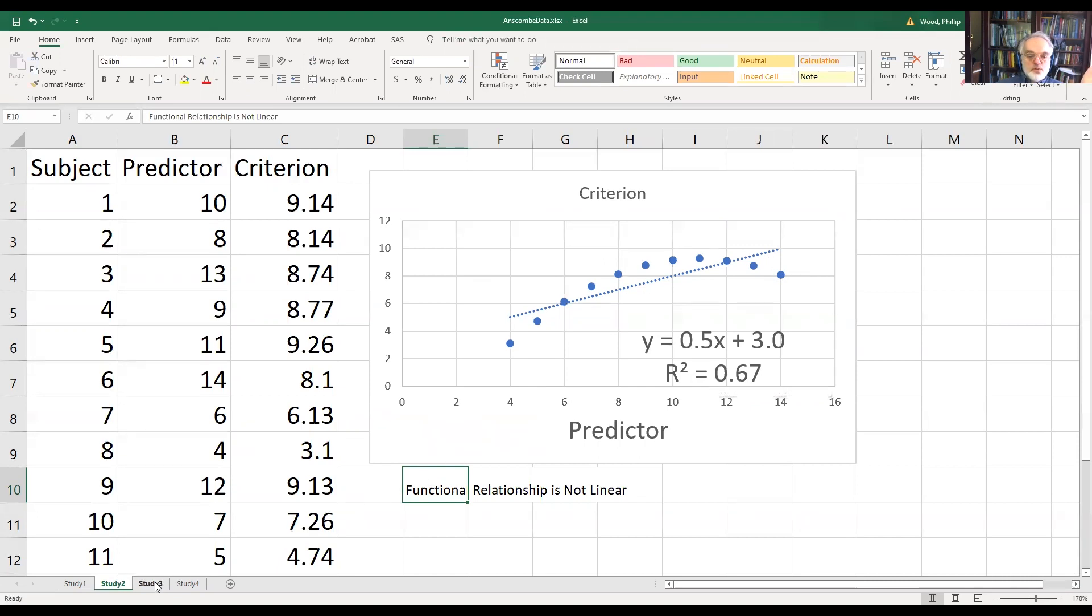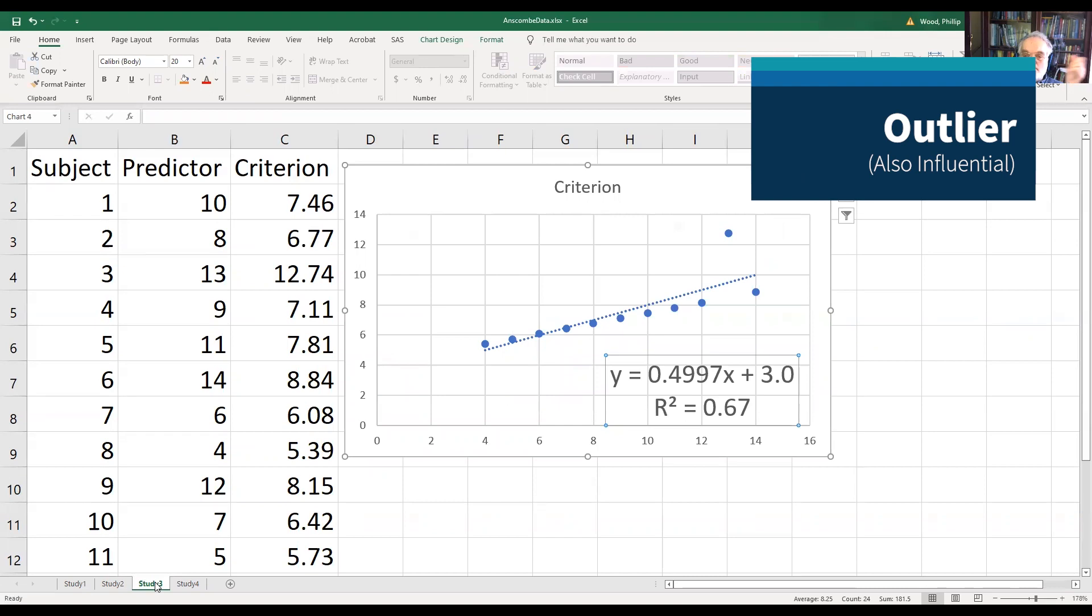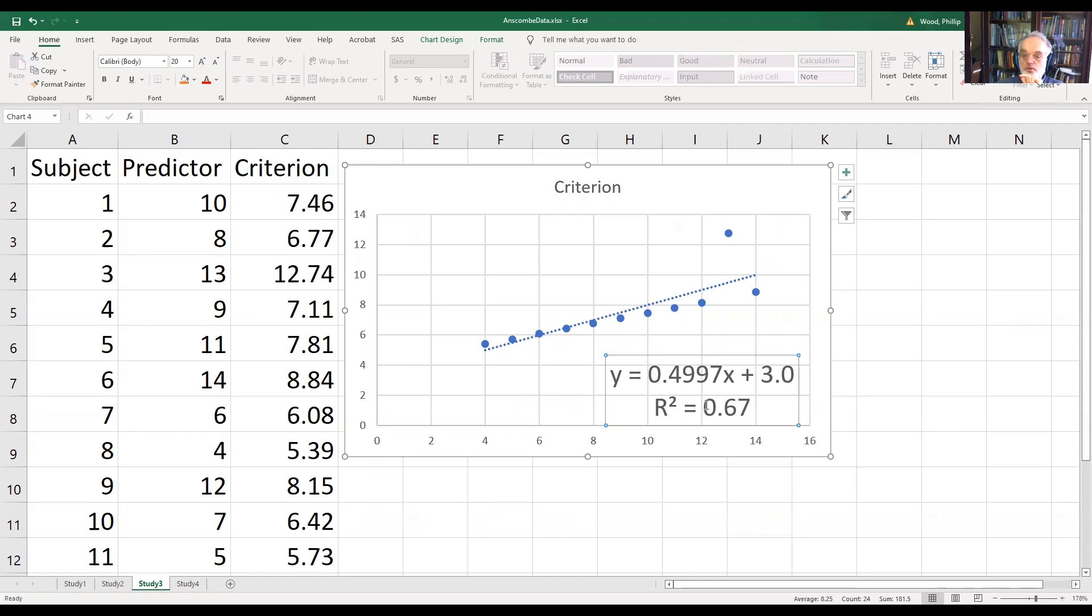Here's another picture in study three. Well, this is an example of an outlier who is also somewhat influential. That is, notice I have the same correlation between X and Y, predictor and criterion, and the same formula. But this individual is giving me a lot more errors of prediction, and they're also influential. They pulled the regression line off of what I would have otherwise had if I wouldn't have had that person in my study. So that 0.67 is again deceptive. Were it not for this person, my prediction would have been perfect.